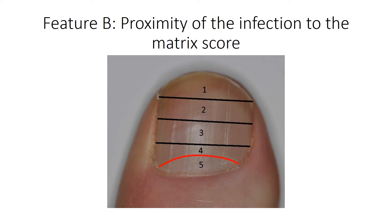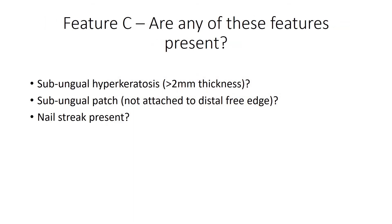For Feature B, you measure the proximity of the infection to the matrix — the closer to the matrix, the higher the score. The system splits the nail into roughly four quarters, with the lunula, which is the nail matrix itself, scoring five. Whatever level the infection reaches, you score accordingly. Infection near the free edge scores one, further toward the matrix scores two, three, four, and so on. This gives you your B score.